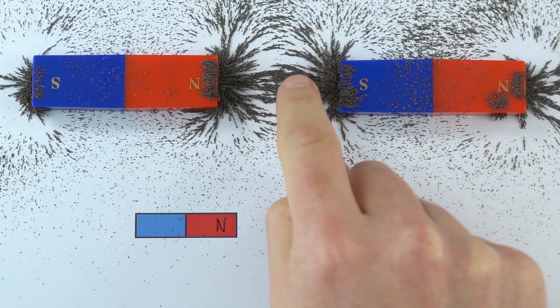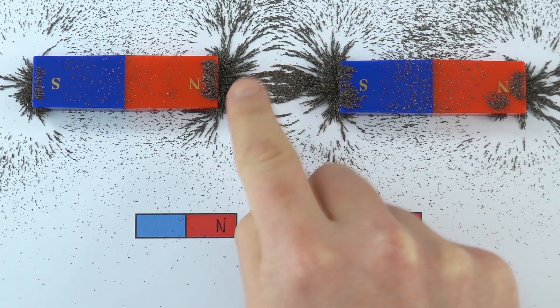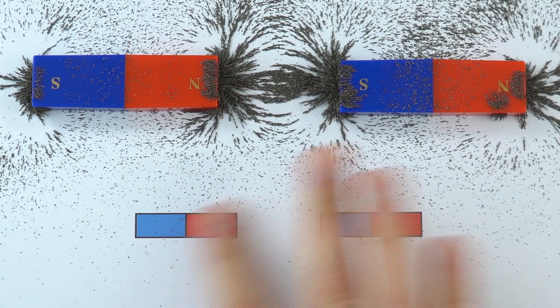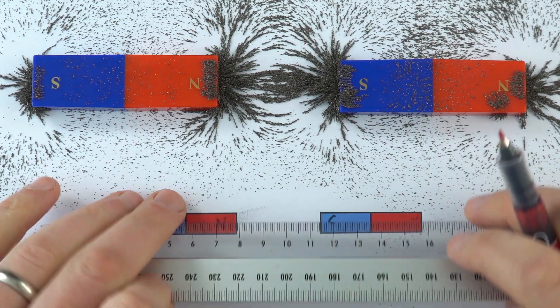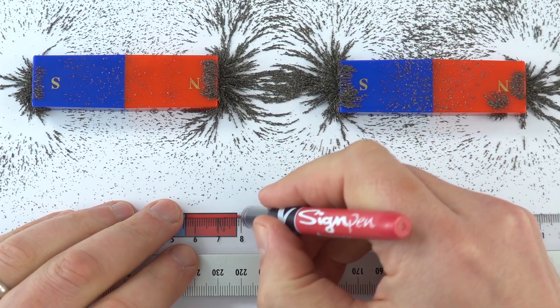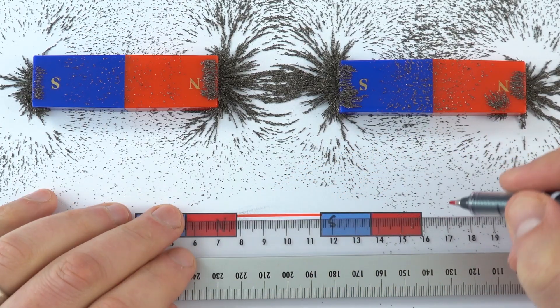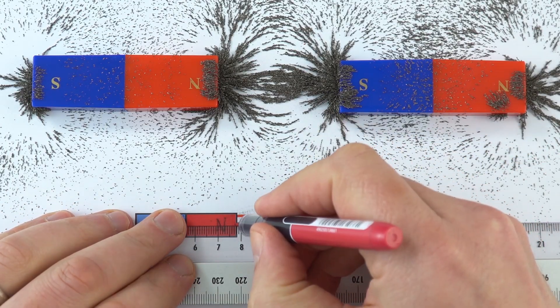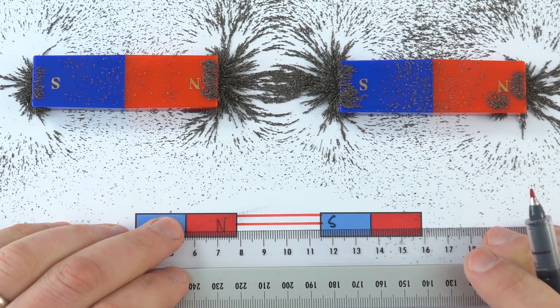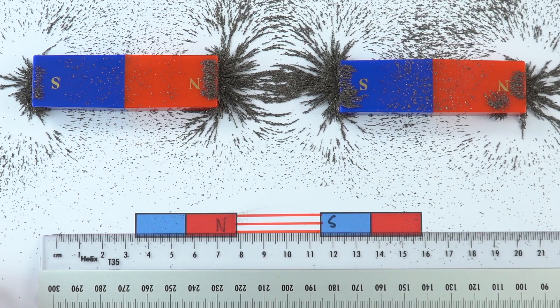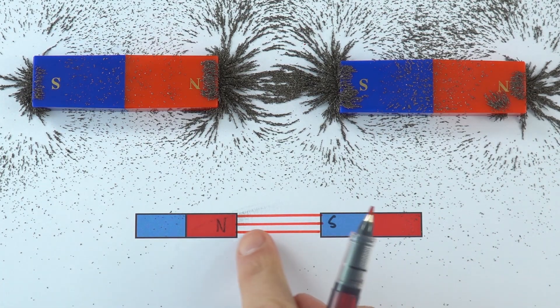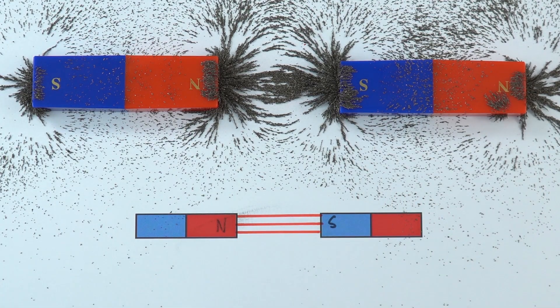It's this region here which is really important. What we have actually between them are these sort of parallel lines where the iron filings have lined up. If I draw this onto the diagram below, I'm going to use our ruler to show that between the poles. I'm going to draw the ruler so they're nice and straight. I'm going to make sure that they're evenly spaced. This shows that we have the same field all the way between these two poles of the magnet. This is what we call a uniform field.